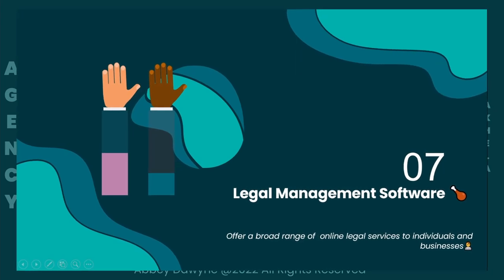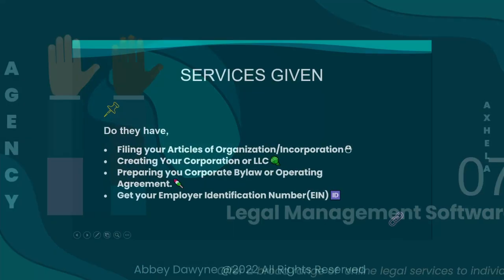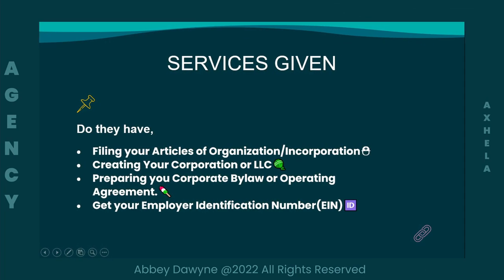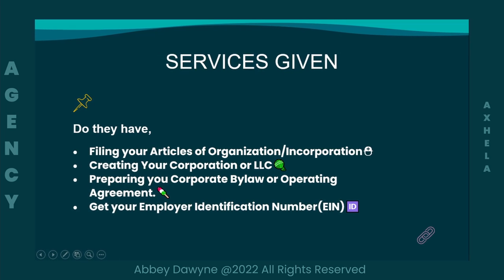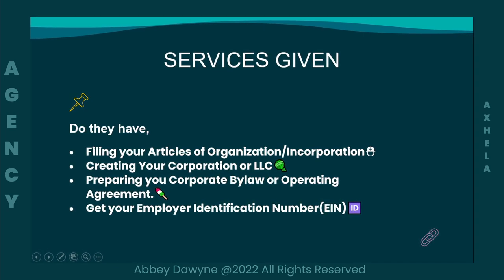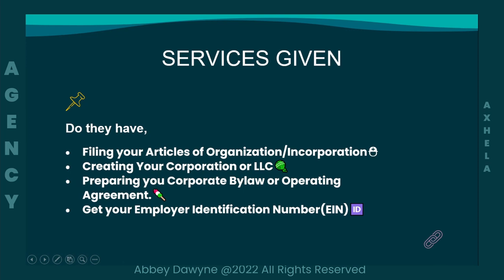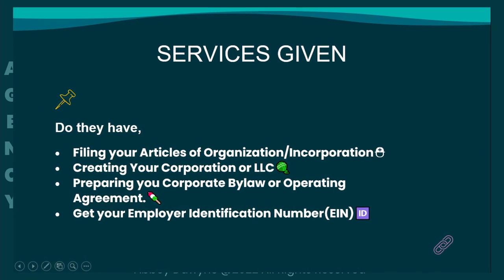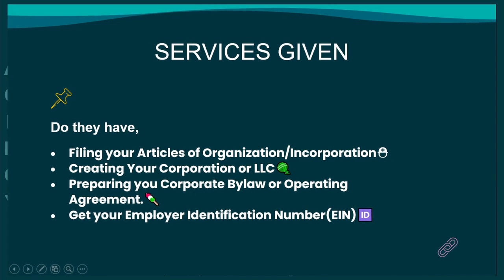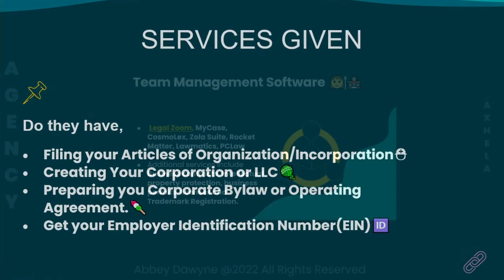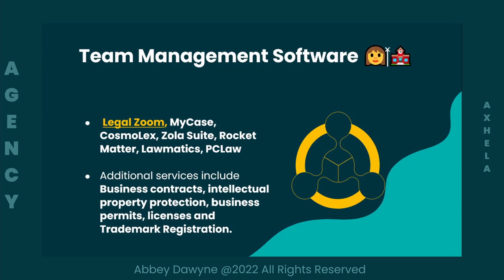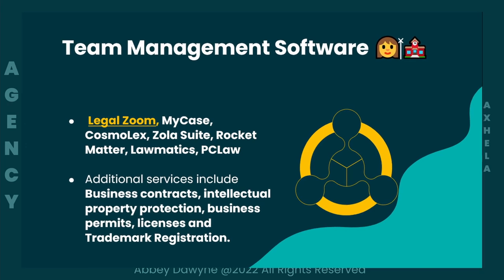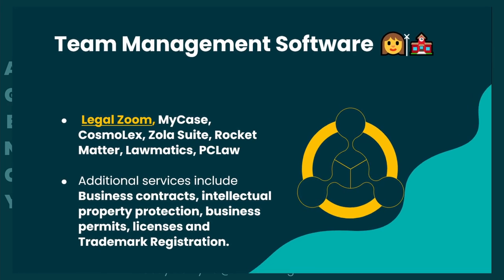Tool number seven is legal management software. Tools like LegalZoom offer a broad range of online legal services to individuals and businesses, and most are free. Services include filing your articles of organization, creating a corporation or LLC, preparing corporate bylaws or operating agreements, and getting your Employer Identification Number. Additional services include business contracts, intellectual property protection, business permits, licenses, and trademark registration.